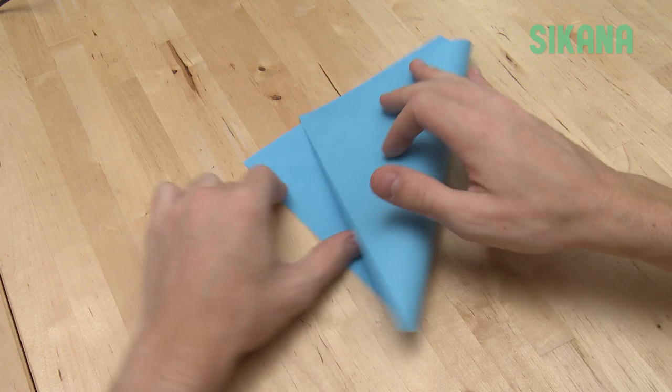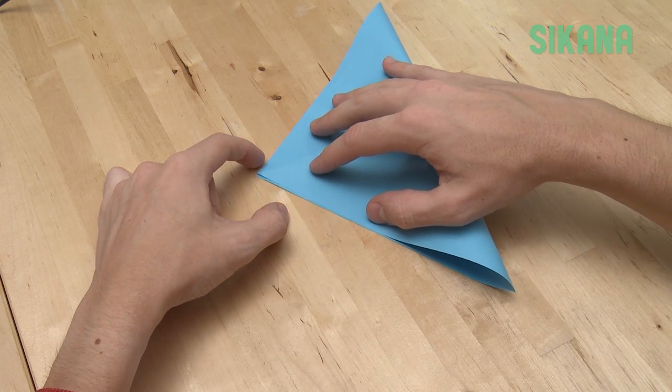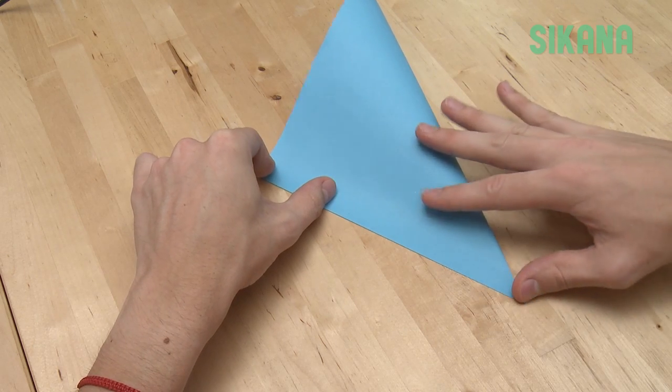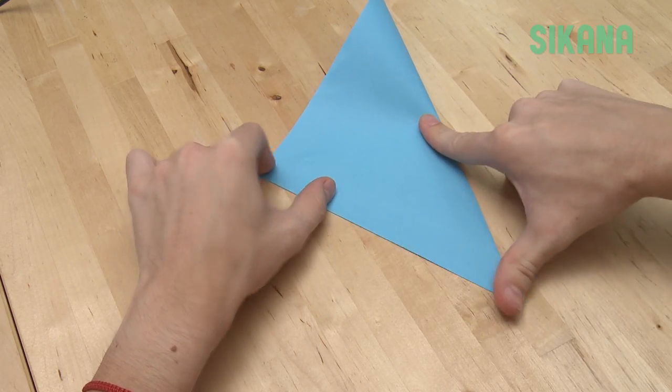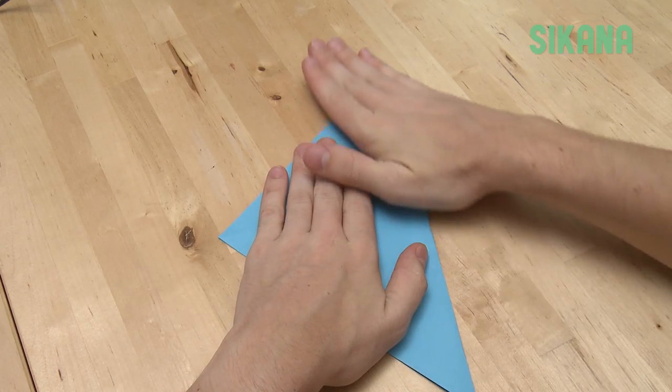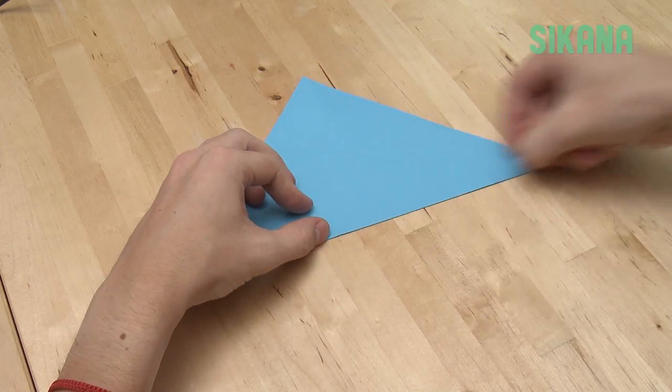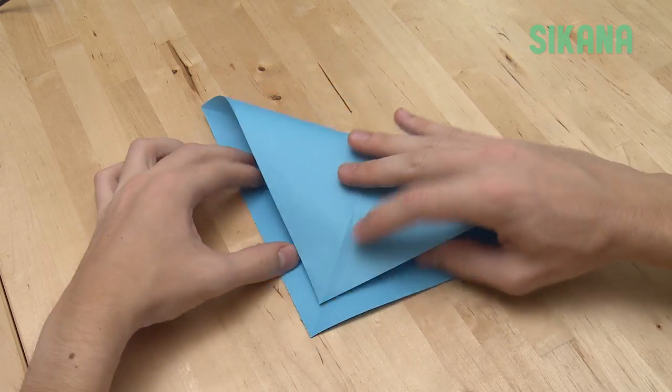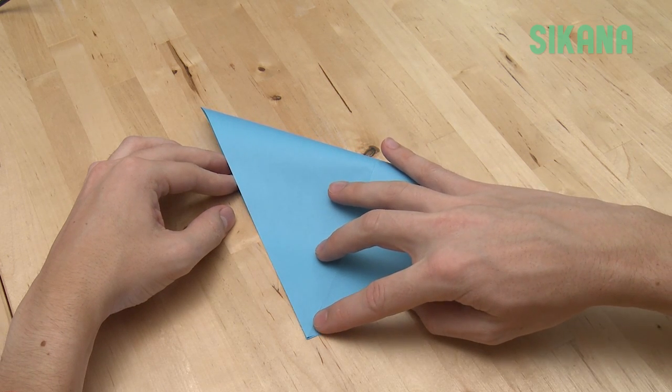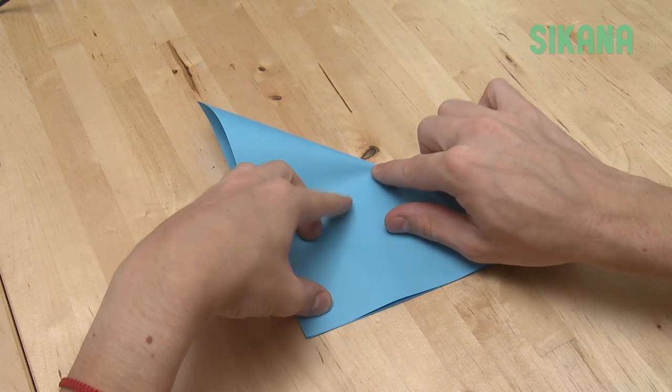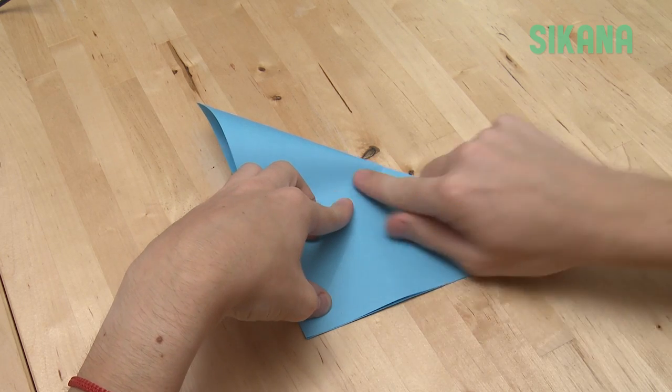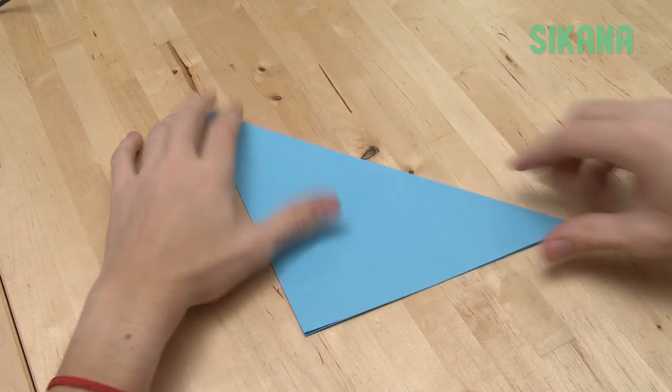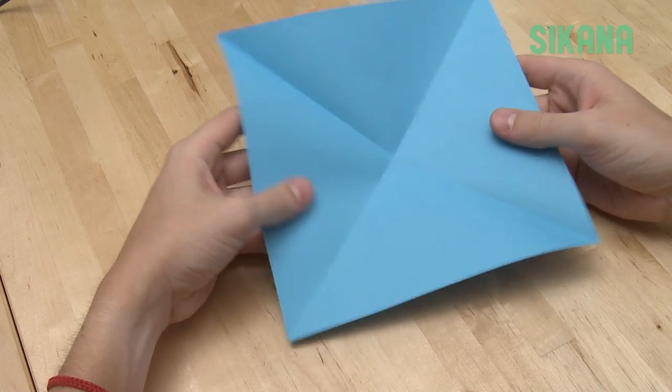Take a square sheet of paper and fold it in half diagonally. Open and repeat for the other diagonal. Open the sheet, you should see these creases.